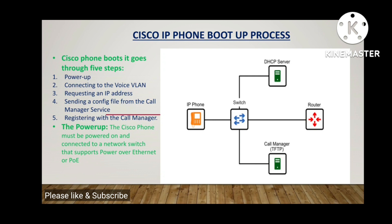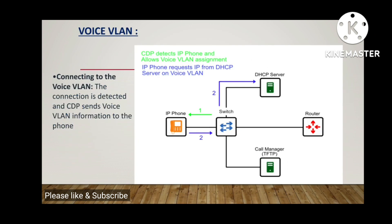Once the phone powers on, it loads some programs and we can see the Cisco image on the phone display. After that, the switch will send VLAN information to the Cisco IP phone through CDP — Cisco Discovery Protocol. This mechanism applies when both the phone and the switch are Cisco devices.